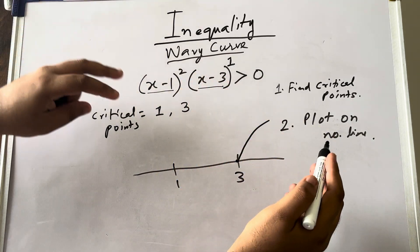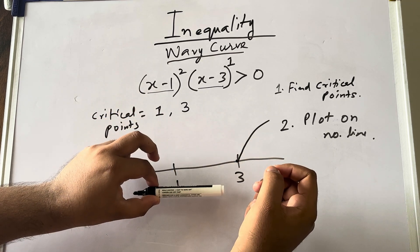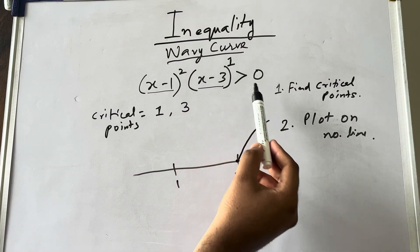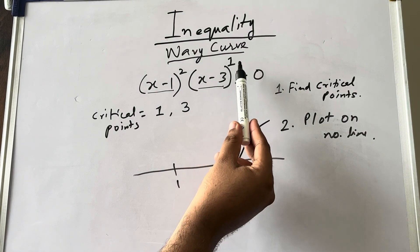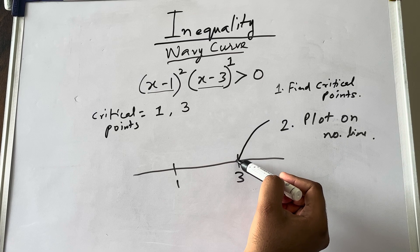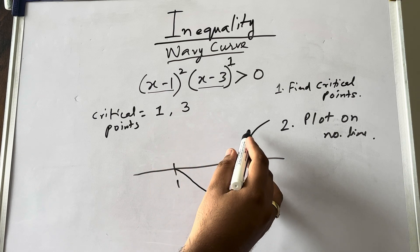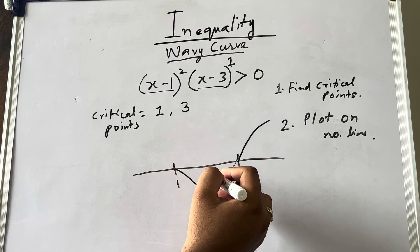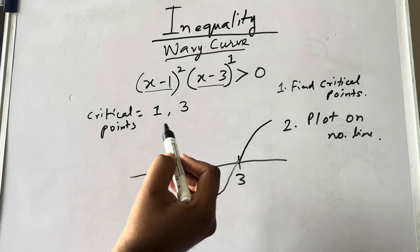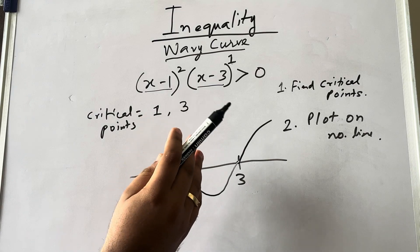Understand: think of this as a straight line. Above this line is the positive part; below is the negative part. You are currently on the upper (plus) side. If the power of (x − 3) is odd, you have to change your side. So at 3, power is 1 which is odd — you shift from the plus side to the minus side. If the power is even, you remain on the same side; if odd, you change side.